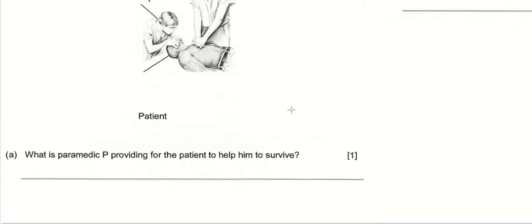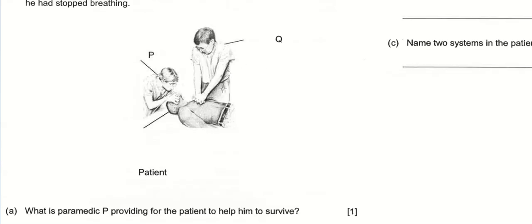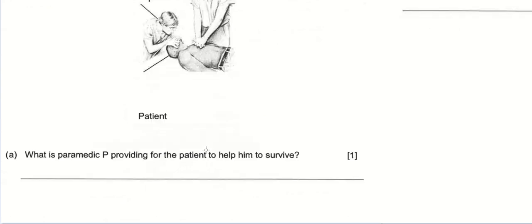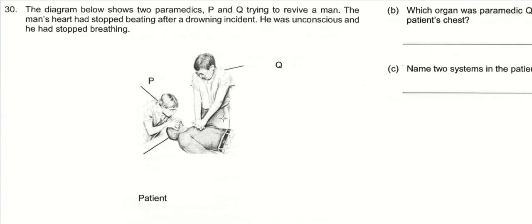So what is paramedic P — the one standing here? He has his two hands on the patient's chest. P is the person on the left, the one blowing into the nose and mouth of the man who's unconscious.